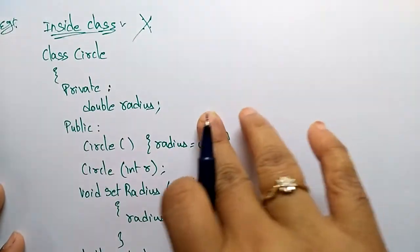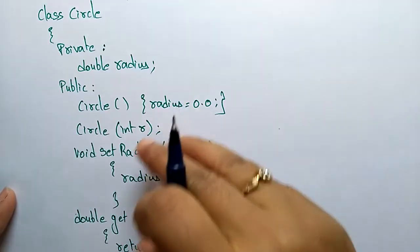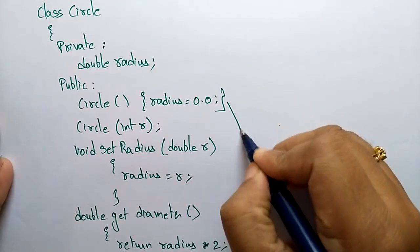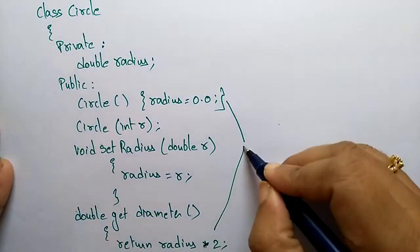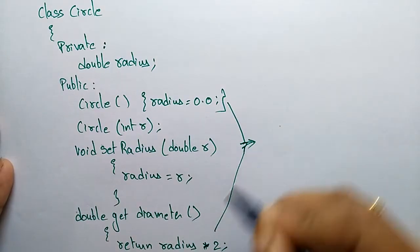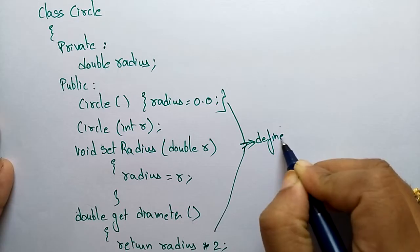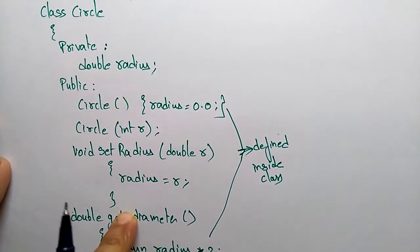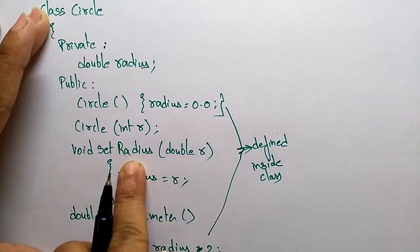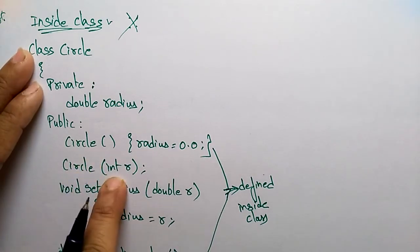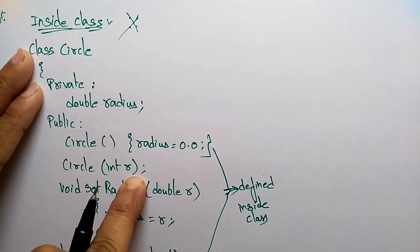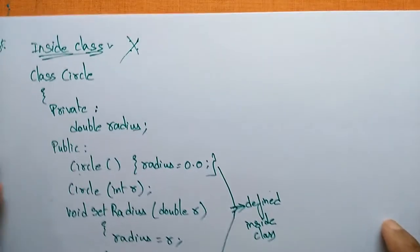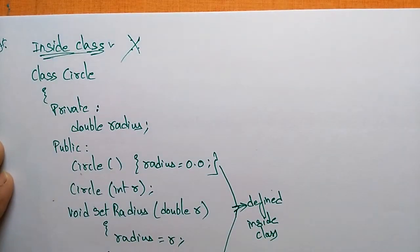So this is how we declared the class inside the class definition. Here, these member functions — Circle, Circle(int r), getDiameter, and setRadius — are all defined inside the class. Now let us see the outside class definition approach.